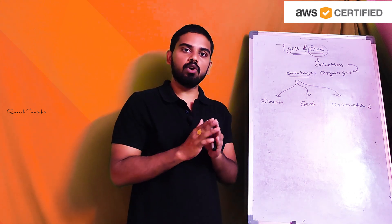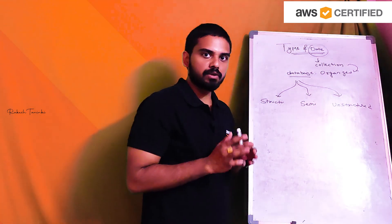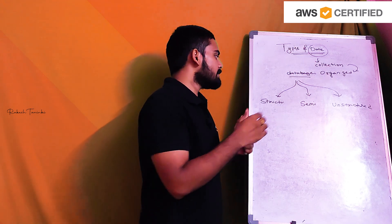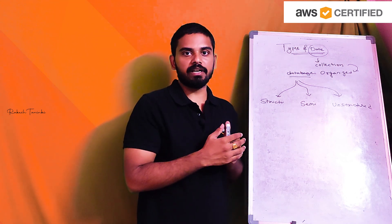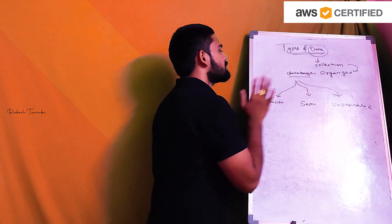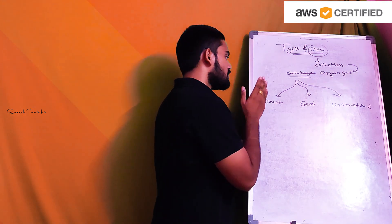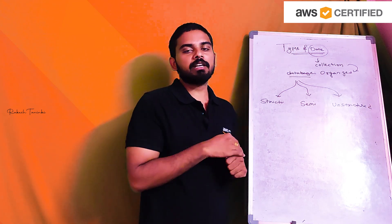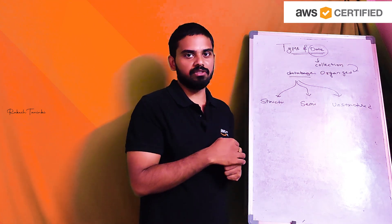We will discuss these three types of data based on database services. Data types are structured, semi-structured, and unstructured. For any type of data, we have AWS services like RDS, DynamoDB, Redshift, etc. We will define these three different types and their structure types. We will also know about SQL and NoSQL.